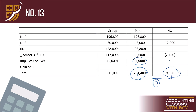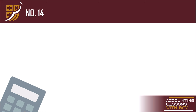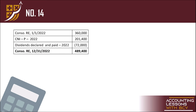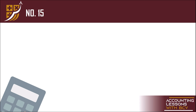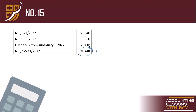Number 14: consolidated retained earnings — same formula. Sagot: 489,400. Number 15: NCNAS — same formula. Sagot: 91,440. That was the full blown subsequent to date of acquisition solution. So yun yung full discussion ng consolidated financial statements subsequent to date of acquisition.